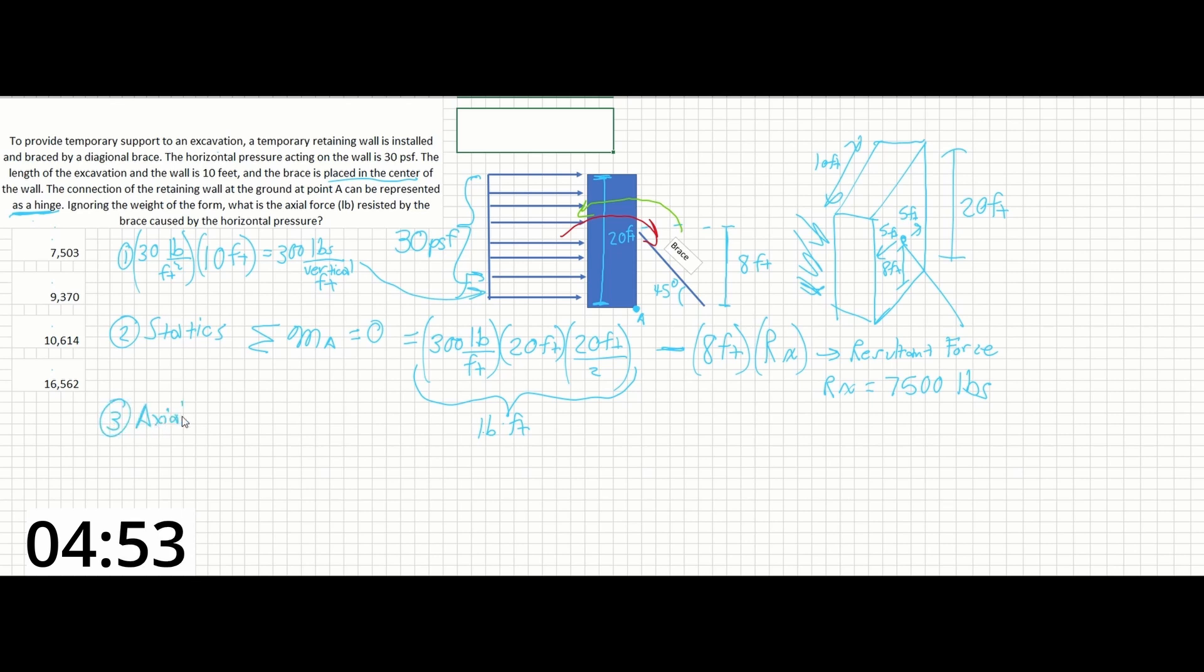For step 3, we need to find the axial load in the brace. So let's look at our force triangle. So in our force triangle, we can see that we have 7,500 pounds in the x-direction.